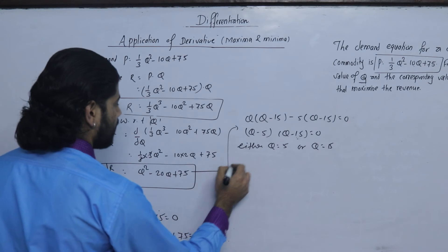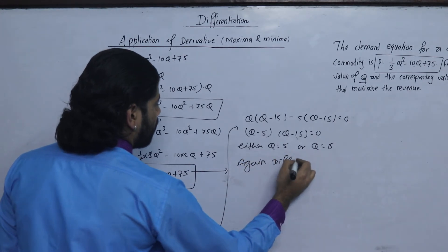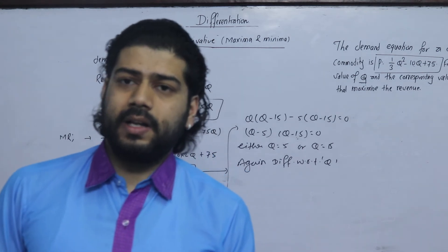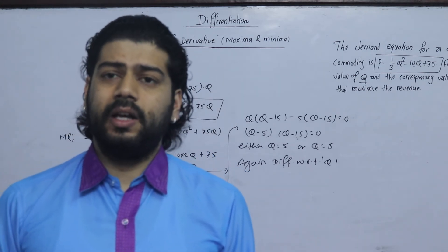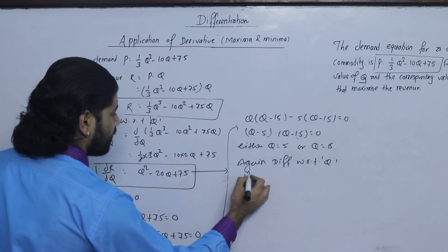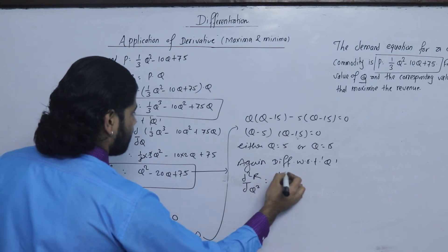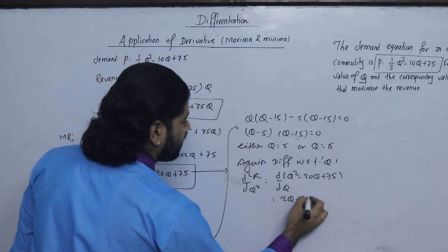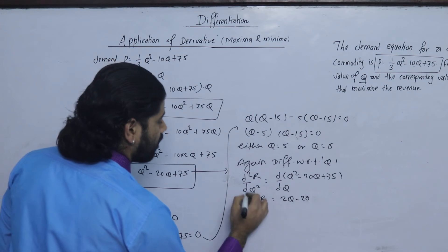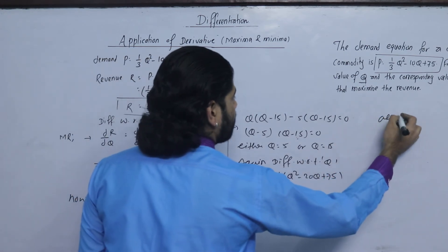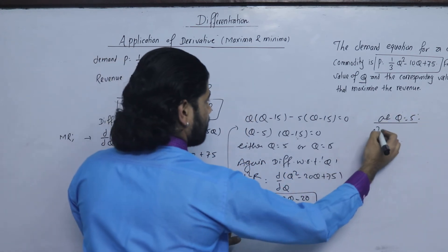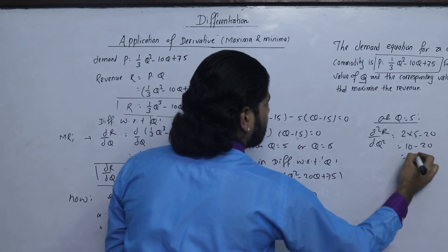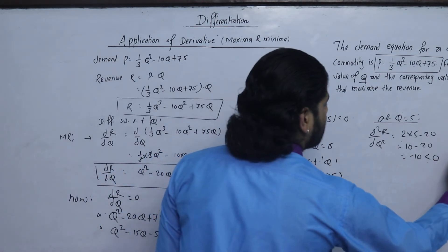Now we apply the second order derivative test to determine maximum and minimum. Differentiating Q squared minus 20Q plus 75 with respect to Q gives 2Q minus 20. At Q equals 5: d²R/dQ² equals 2(5) minus 20 equals 10 minus 20 equals negative 10, which is less than zero.